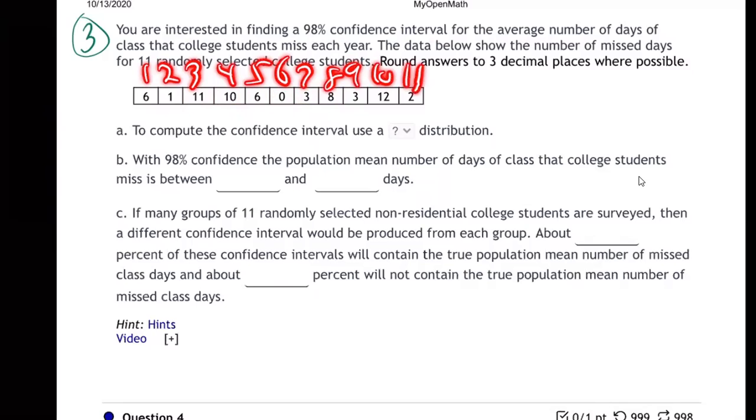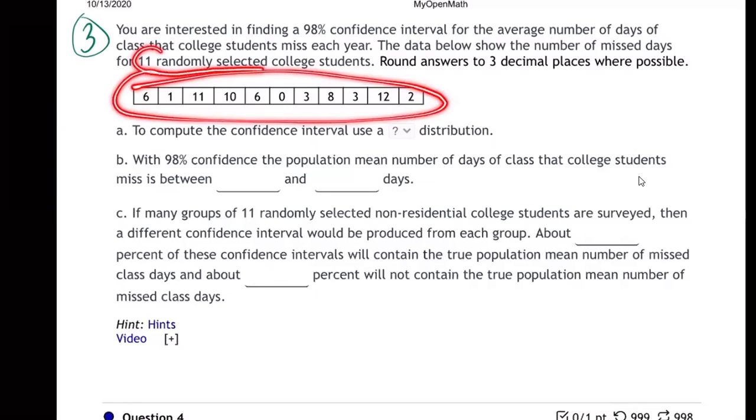11 students each reported the number of days of class they miss each year. And they're trying to figure out a confidence interval. Maybe the administration wants to figure out for our college, what's the average number of days students miss per year. Now they don't have time or the ability to ask every single student. It's just too difficult. That's why we have statistical methods, because we just can't ask every person.